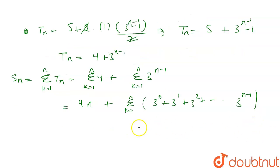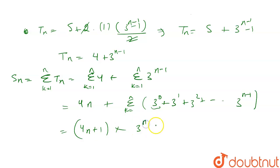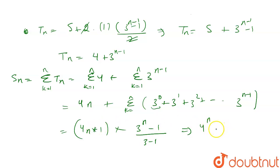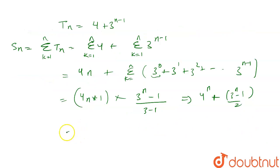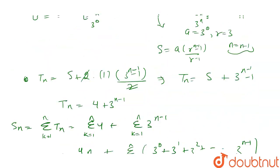This is also a GP. Using the GP sum formula: 4N plus 3 to the power N minus 1, divided by 3 minus 1. This equals 4N plus 3 to the power N minus 1, divided by 2. Taking 1/2 as common and combining, we get 1/2 into 8N plus 3 to the power N minus 1. So this will be our final answer.